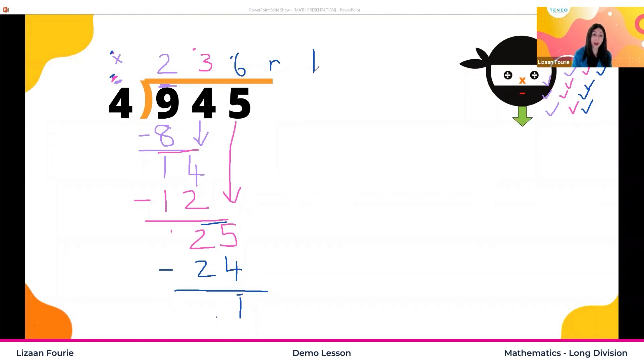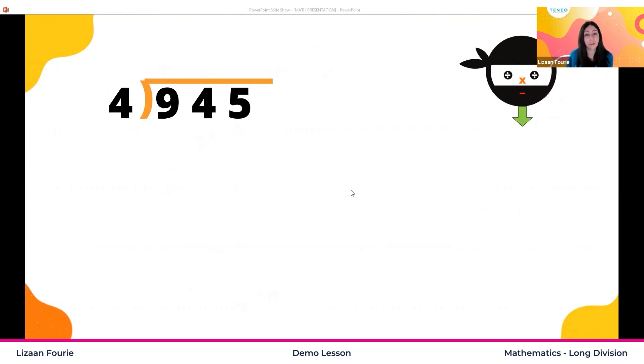Now when we have a look at our final answer, if this was a word problem, your final answer will be 236 with your remainder one. Next up, you'll do the same with the next example. If you get confused with some of the steps, please revisit your module page because there you can see all your steps again. Let's get started.